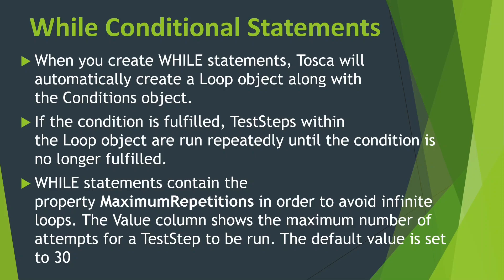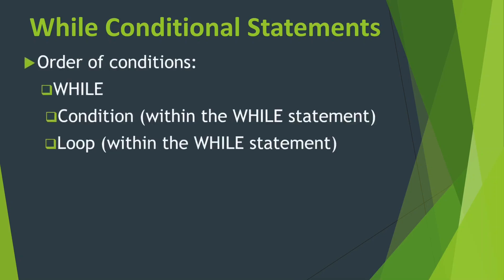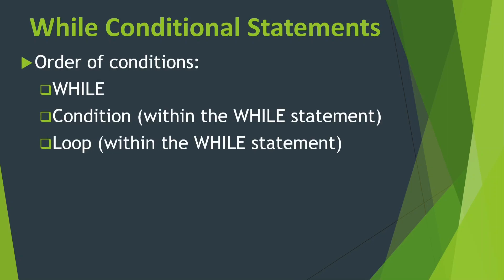Because first it searches for the condition, it enters the loop, and the loop repeats until the condition does not meet. If the condition you automated never meets, it will go into an infinite loop — that is why you can define maximum repetitions for any while loop. The order is: while comes first, then the condition within the while statement, then the loop within the while statement.